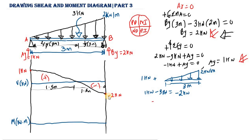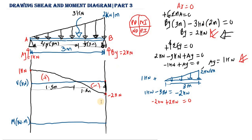At point B we have −2 kN on the shear diagram, and the reaction By = 2 kN acts upward, so −2 + 2 = 0. The shear diagram closes back to zero. If your shear diagram doesn't close up you need to check your work. The shear diagram closing up confirms our answer is correct.